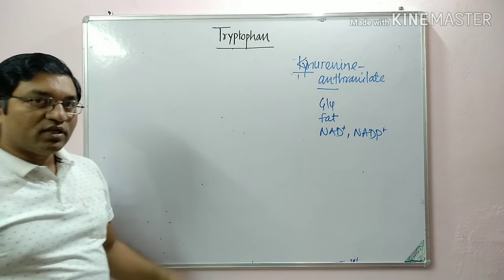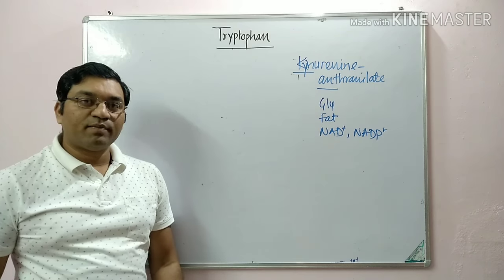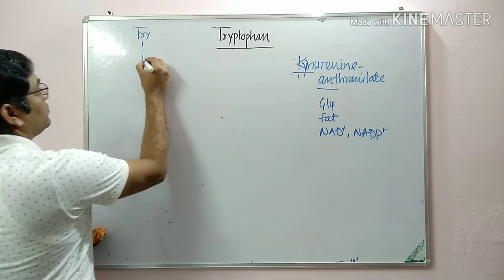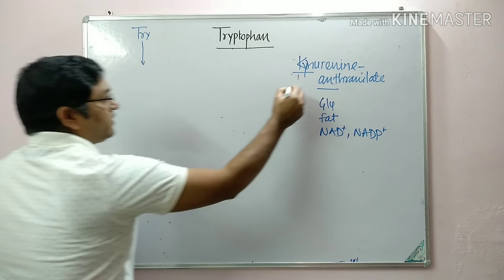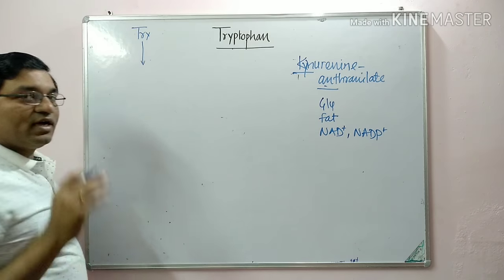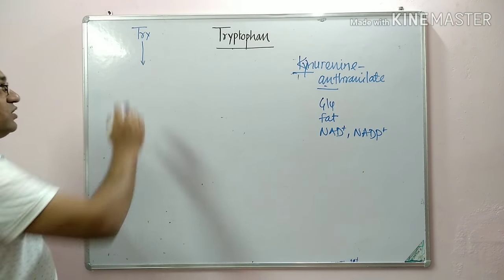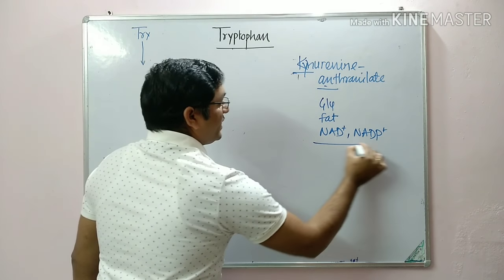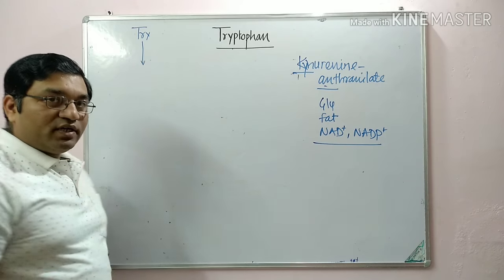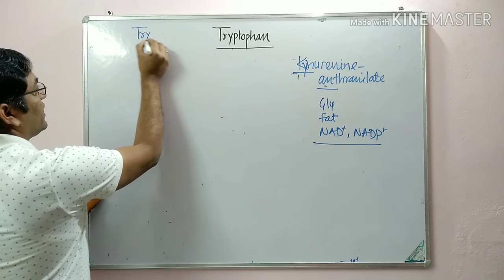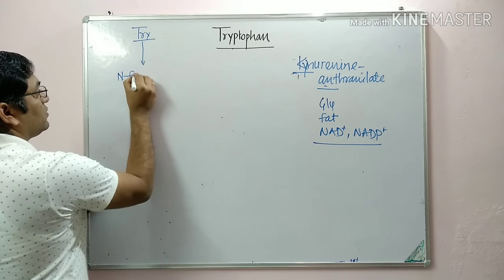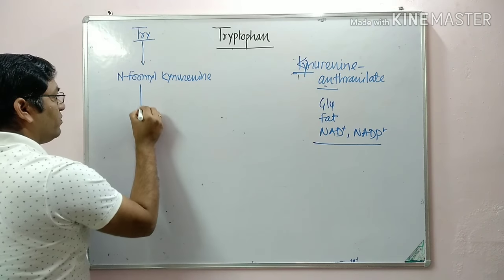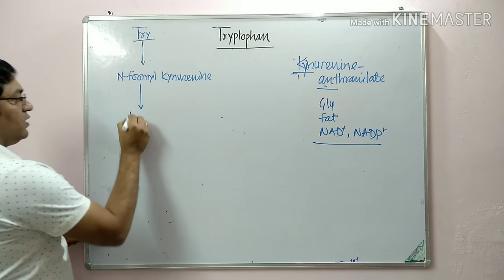The starting enzyme for the kynurenine-anthranilate pathway is tryptophan pyrolase. To remember the pathway: tryptophan → kynurenine → anthranilate → NAD and NADP. By the action of tryptophan pyrolase, tryptophan is converted into N-formyl kynurenine. N-formyl kynurenine is then converted into kynurenine.